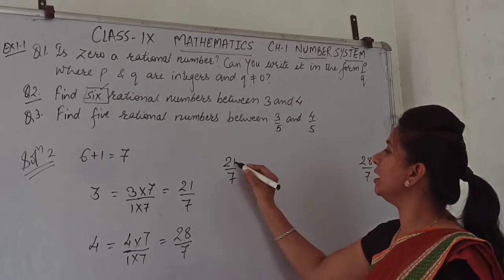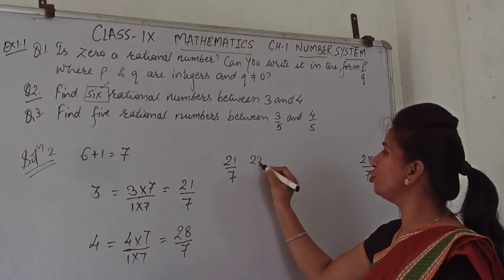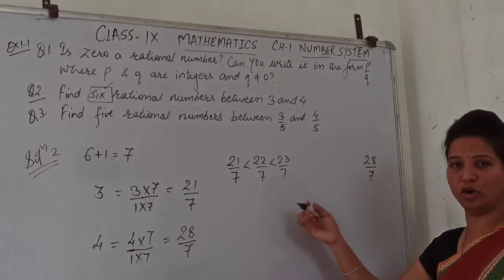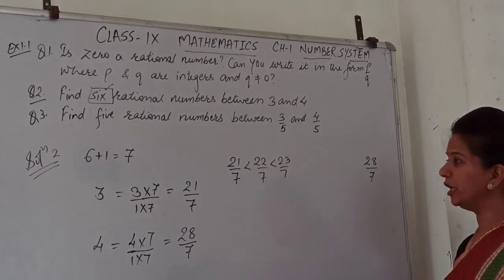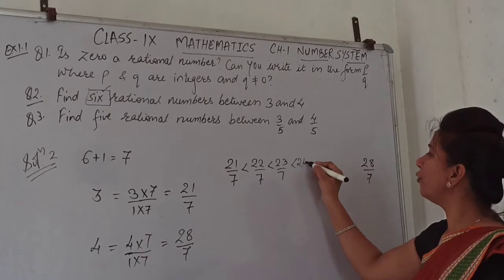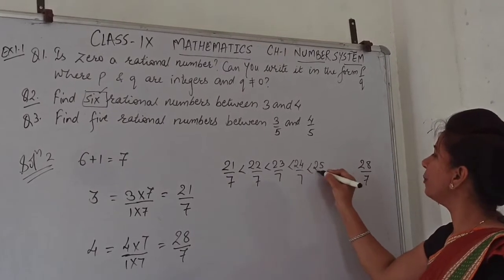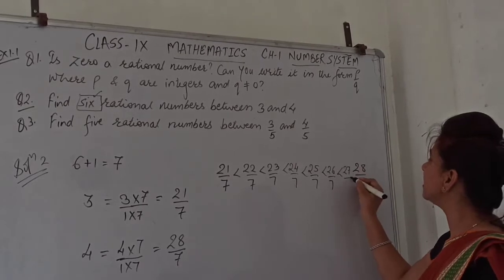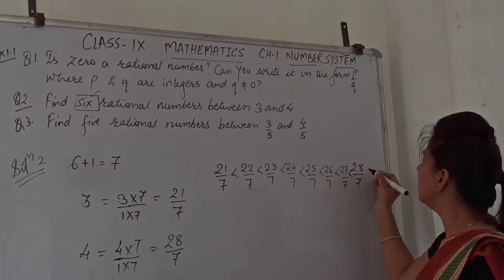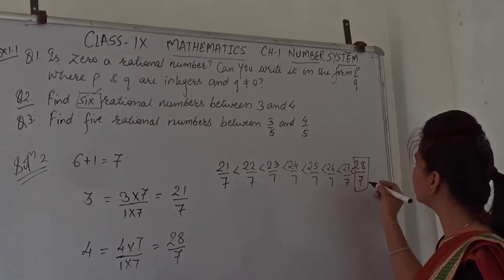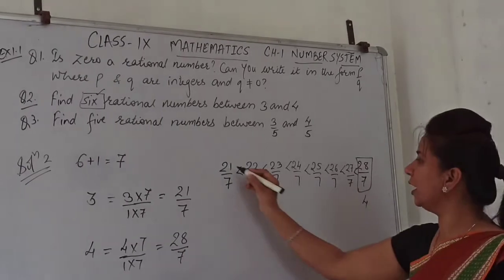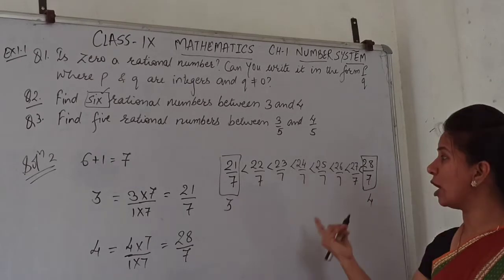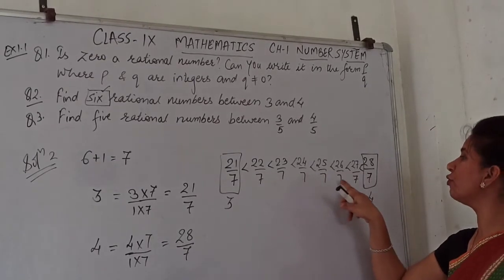After 21 upon 7 comes 22 upon 7, then 23 upon 7. Since the denominator stays the same, we increase the numerator: 24 upon 7, 25 upon 7, 26 upon 7, and the last one is 27 upon 7. The count gives us 1, 2, 3, 4, 5, 6 — exactly 6 rational numbers between 3 and 4.